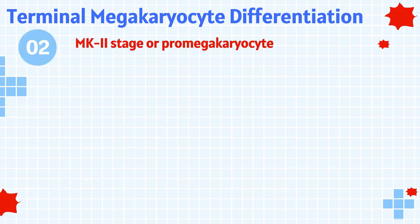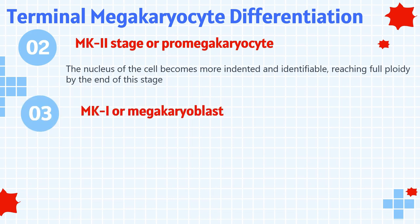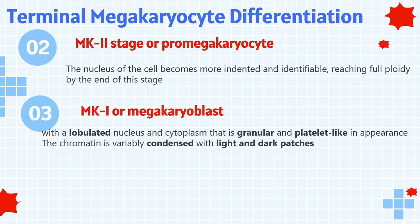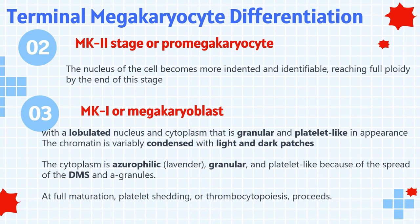During the MK2 stage or promegakaryocyte, the nucleus of the cell becomes more indented and identifiable, reaching full ploidy by the end of this stage. The fully matured MK3 stage megakaryocyte is large and easily recognizable under a microscope, with a lobulated nucleus and granular, platelet-like cytoplasm; the chromatin is variably condensed with light and dark patches. The cytoplasm is azurophilic lavender, granular, and platelet-like because of the spread of the demarcation system and alpha granules. At full maturation, platelet-shedding, or thrombocytopoiesis, proceeds. Ploidy levels can be measured using flow cytometry if needed.